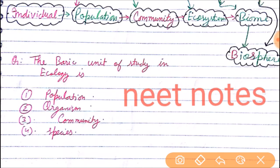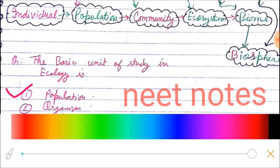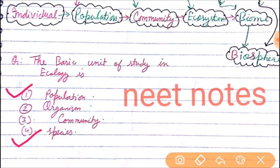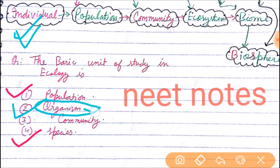The first question asks: what is the basic unit of study in an ecosystem? You might assume the answer is species or population, but that is not correct. The correct answer is Organism, because organisms are individuals — so organism is the basic unit.